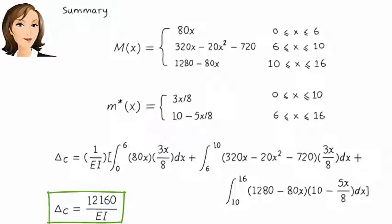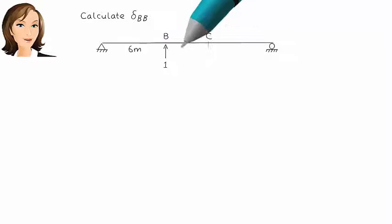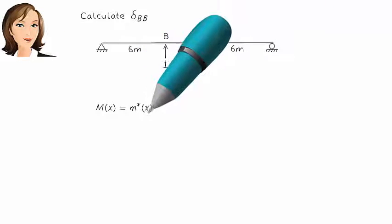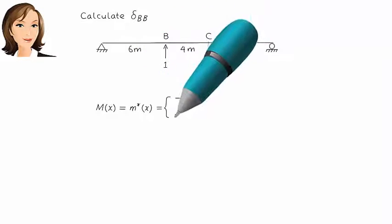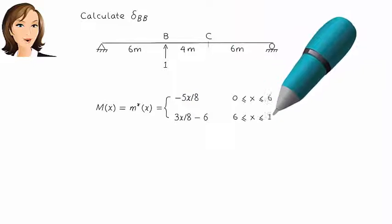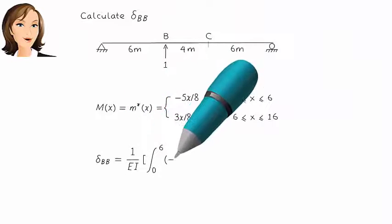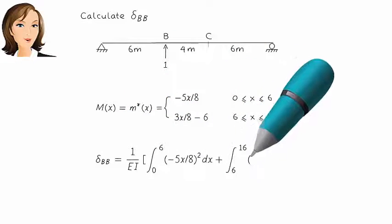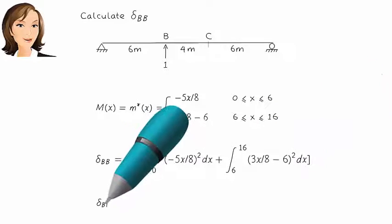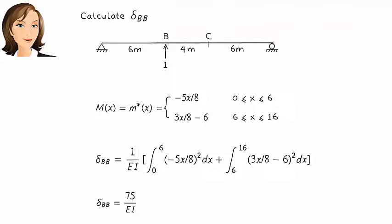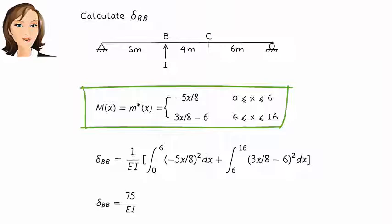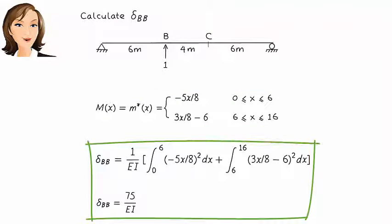We have four more displacements to calculate. First, let's determine delta B,B — the vertical displacement at B due to a vertical unit load applied at B. Since the unit load and the virtual unit load are applied at the same point and in the same direction, M and M star are going to be the same. Here are the bending moment equations, and here is the equation for delta B,B.